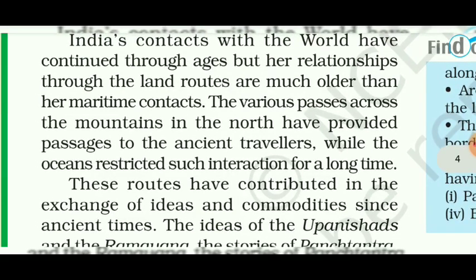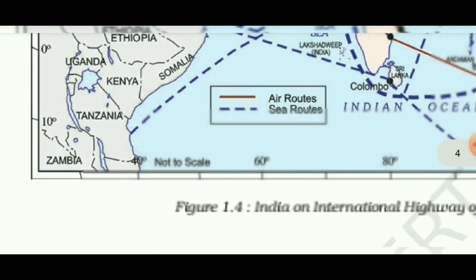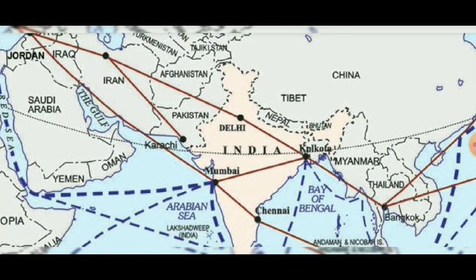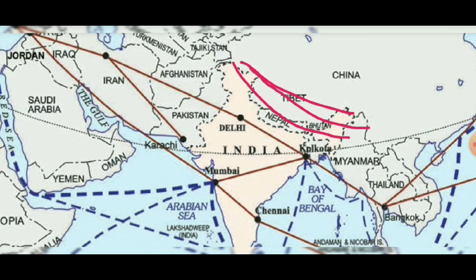Various passes across the mountains in the north have provided passages to ancient travelers, while the ocean restricted such movement for a long time. The northern part of India has the Himalayas — a mighty wall — which had restricted India's interaction with other countries. The question is: how did interaction become possible despite this barrier?